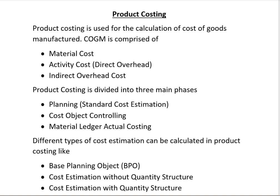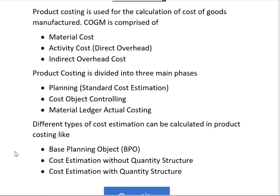Product Costing is divided into three main phases. The first phase is planning, which is standard cost estimation. The second phase is Cost Object Controlling, and the third phase is Material Ledger Actual Costing. Different types of cost estimation can be calculated in Product Costing, like Base Planning Object, where we have not yet created the material for the finished good.